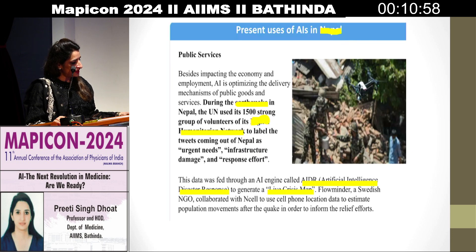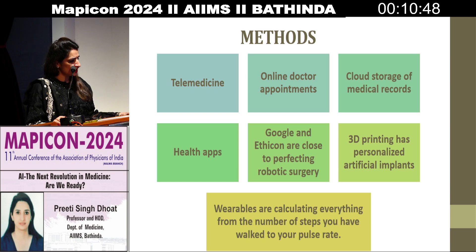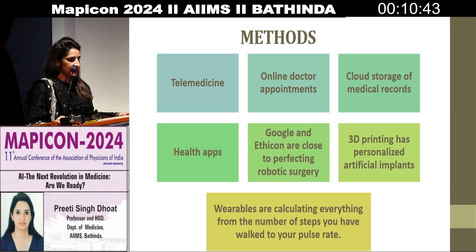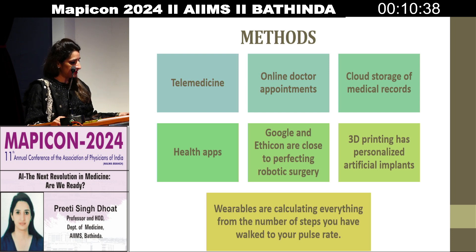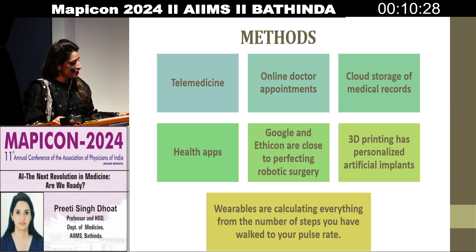Present uses in Nepal show that, besides impacting the economy and employment, artificial intelligence is optimizing the delivery mechanism of public goods and services, as depicted in this image. Methods we can employ in healthcare include telemedicine, online doctor appointments, cloud storage of medical records, health apps. Google and Ethicon are close to perfecting robotic surgeries, 3D printing has personalized artificial implants, and wearables are calculating everything from steps walked to pulse rate.